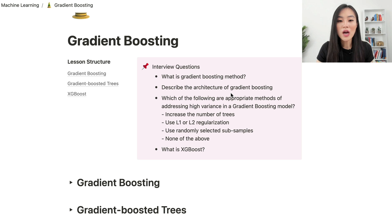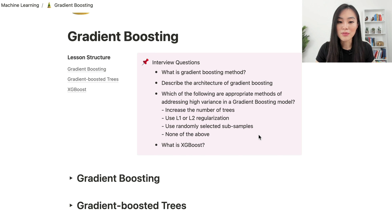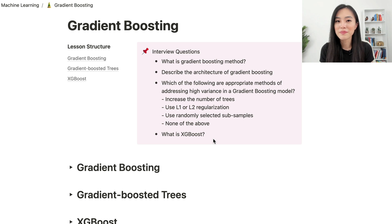What is gradient boosting? Describe the architecture of gradient boosting. Which of the following are appropriate methods of addressing high variance in a gradient boosting model: increase the number of trees, use L1 or L2 regularization, use randomly selected subsamples, or none of the above? What is XGBoost? After watching this video you should be able to answer all these interview questions.